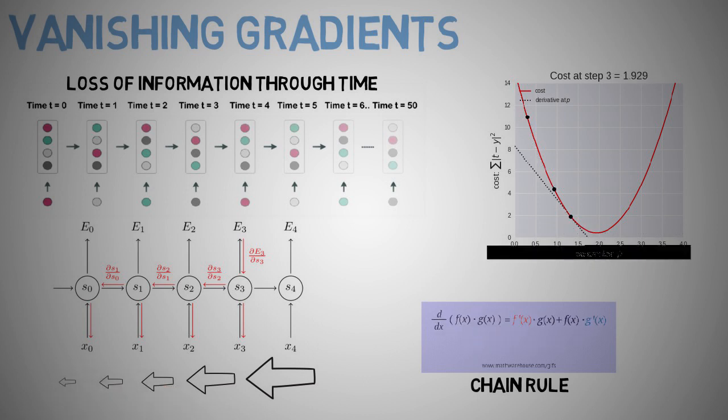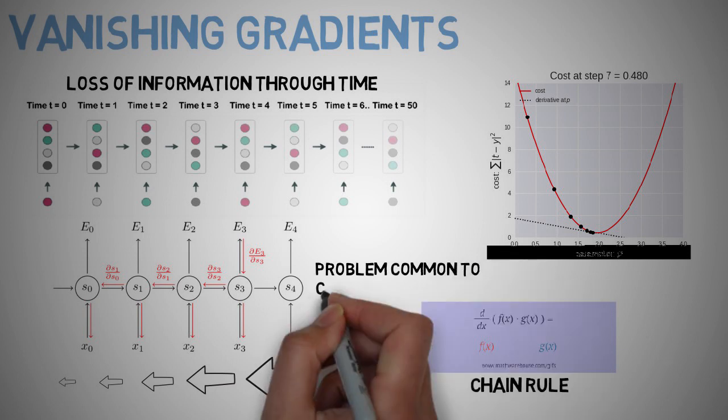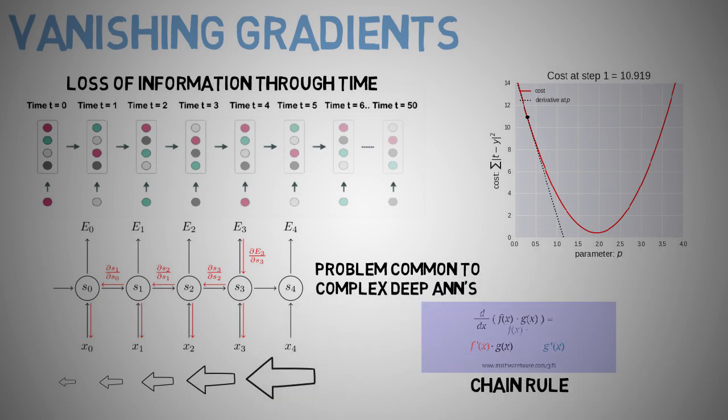Now the vanishing gradient problem is not only a problem with just RNNs, but also very complex deep artificial neural networks, basically any network that is trained through backpropagation.